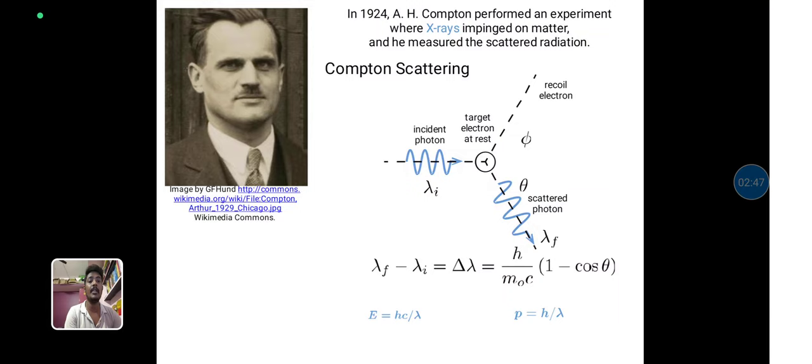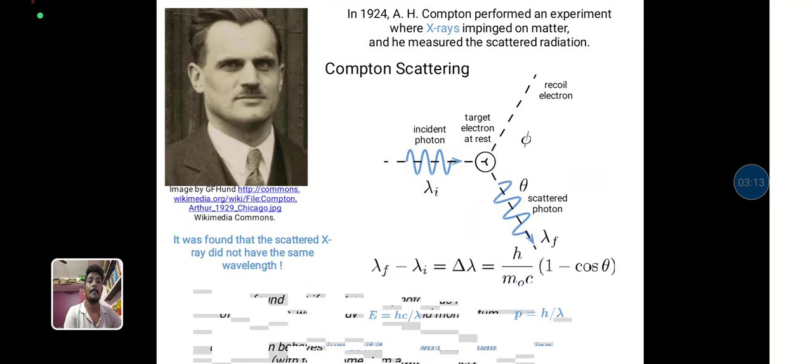The scattered light photon energy, lambda f minus lambda i is equal to delta lambda, h divided by m0c, 1 minus cos theta. We substitute E is equal to hc divided by lambda, and p is equal to h by lambda. He derived from the Compton scattering that the first energy when the light photon targeting from the electron is scattered, proved from the Compton effect.